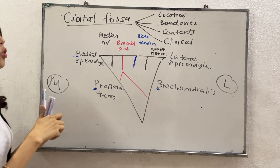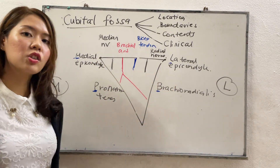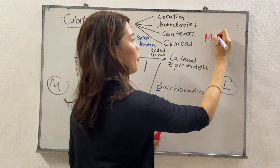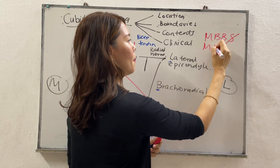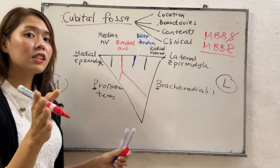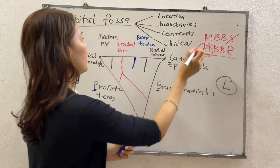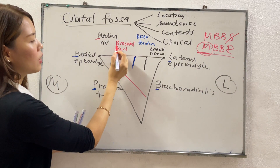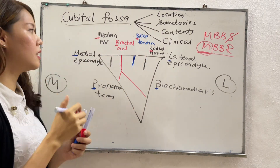To remember the contents from medial to lateral — you are in the MBBS course, so I want you to change the name of your course to MBBR. MBBR represents the contents of the cubital fossa from medial to lateral: M is the median nerve, B is the brachial artery, B again is the bicep tendon, and R is the radial nerve.